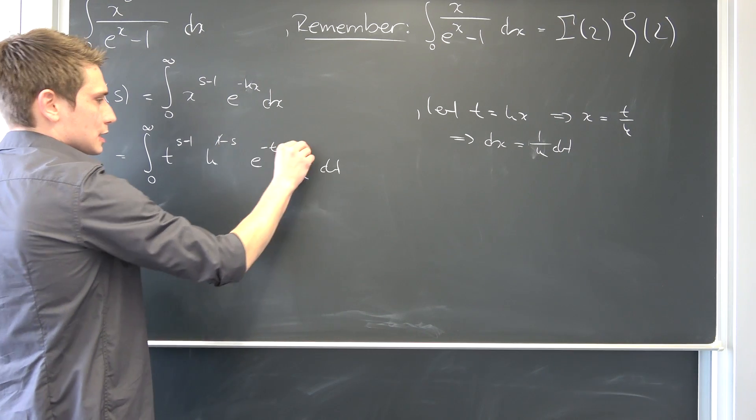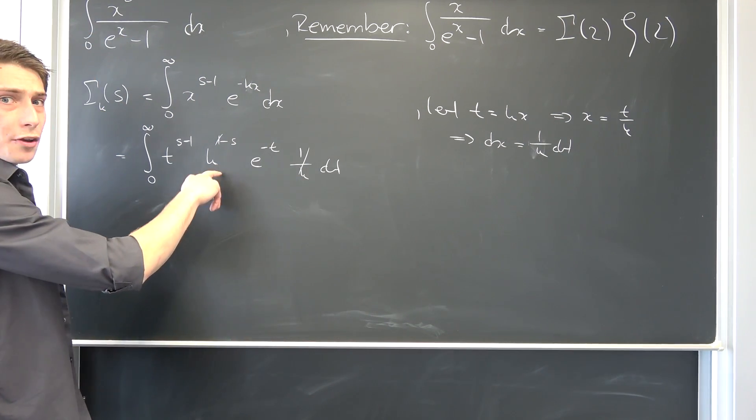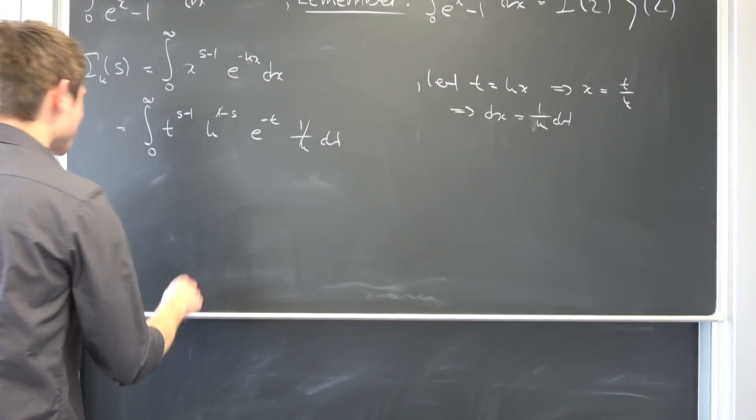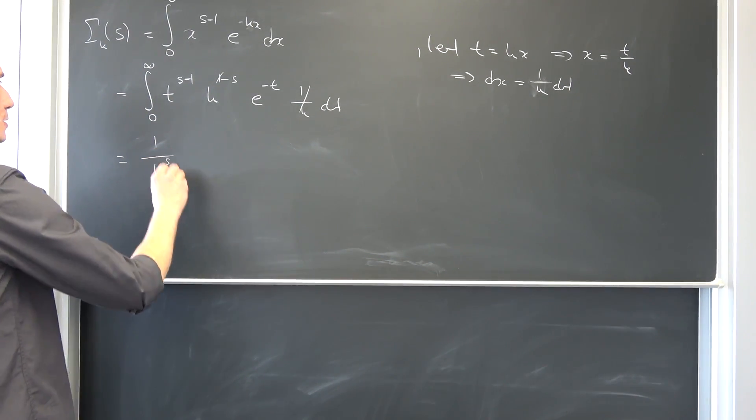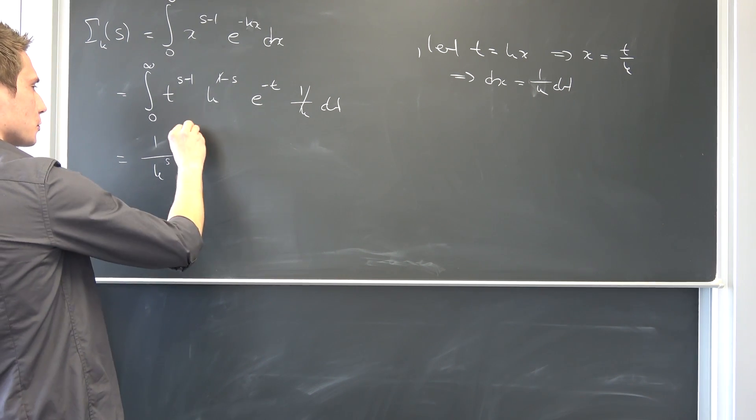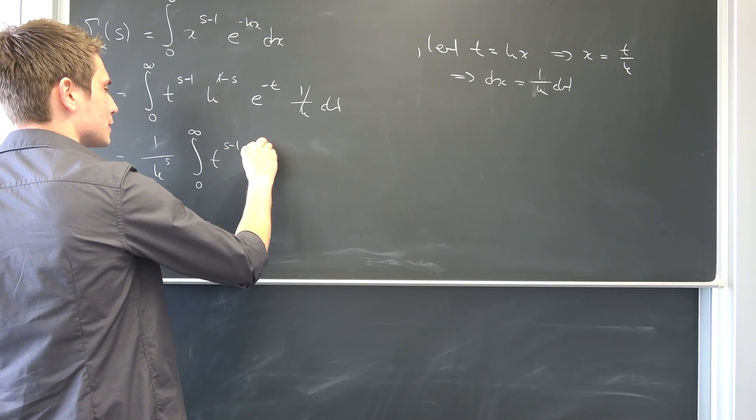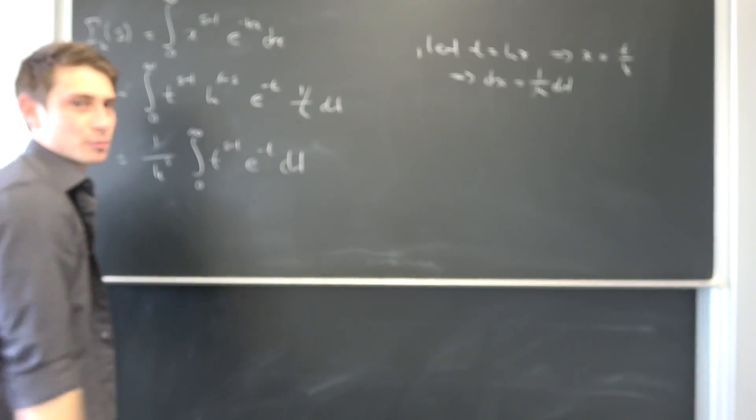And why not bring this 1 over k to the s power to the outside? Maybe you can already see where this is going. This is so cool. So this 1 over k to the s power times the integral from 0 to infinity of, well, t to the s minus 1 power e to the negative t integrated with respect to t.